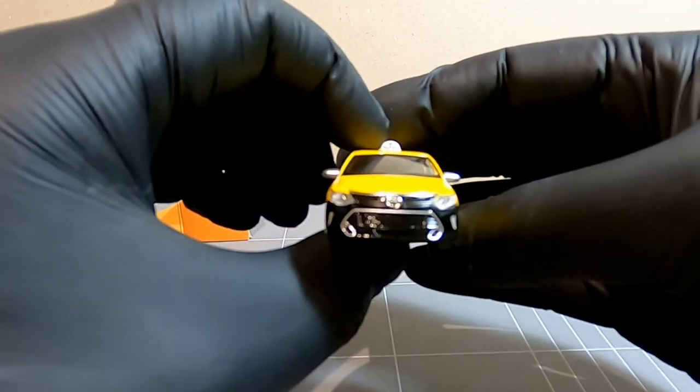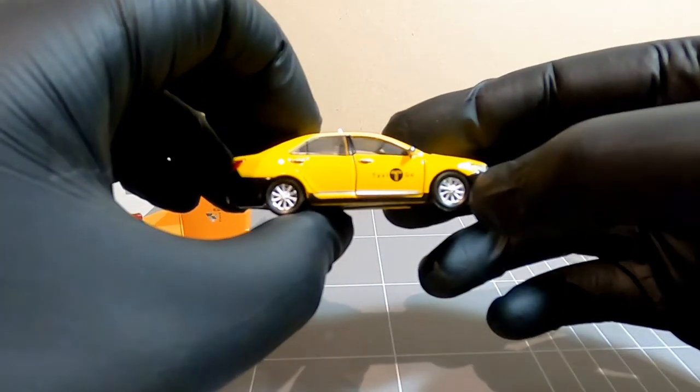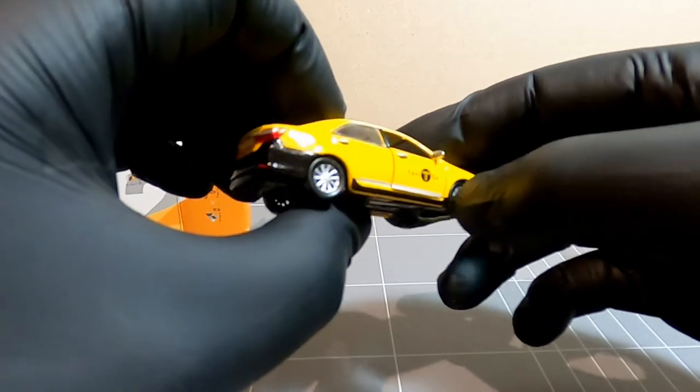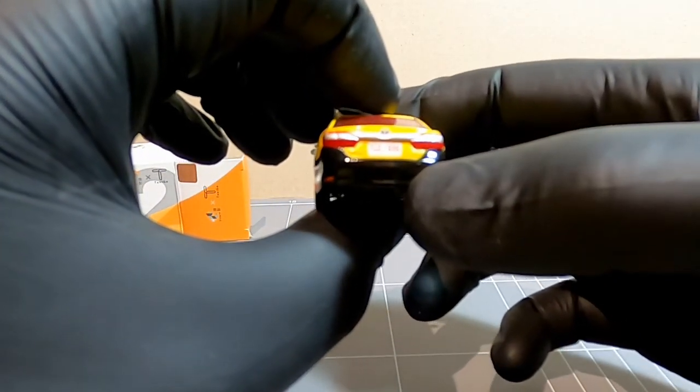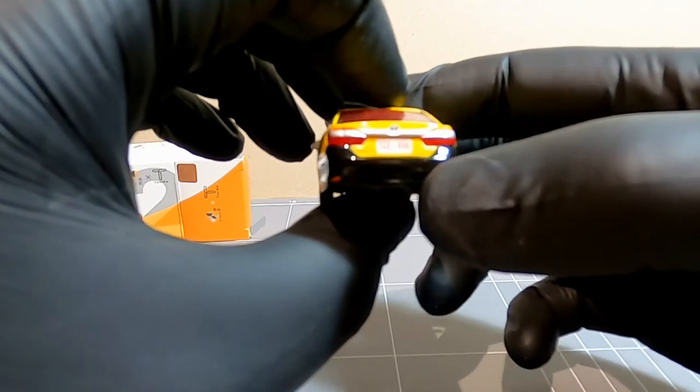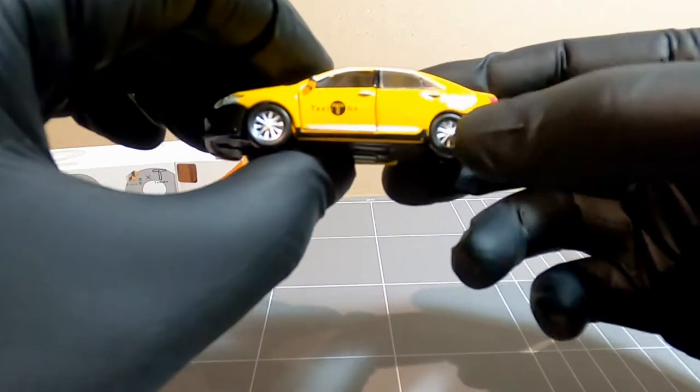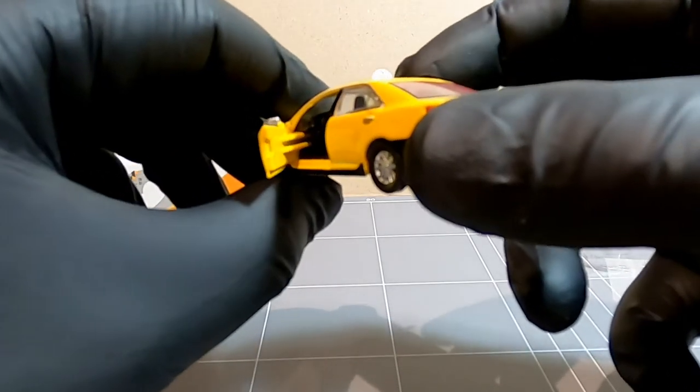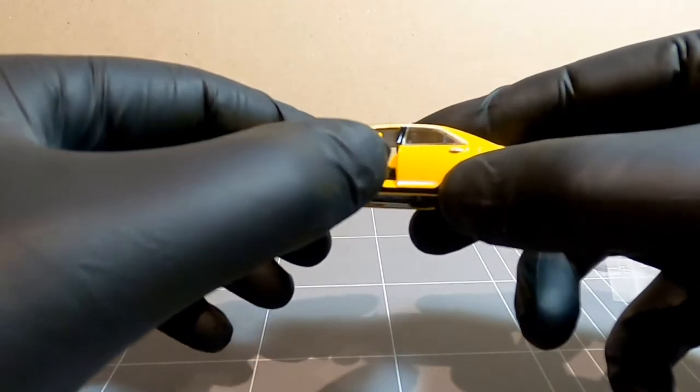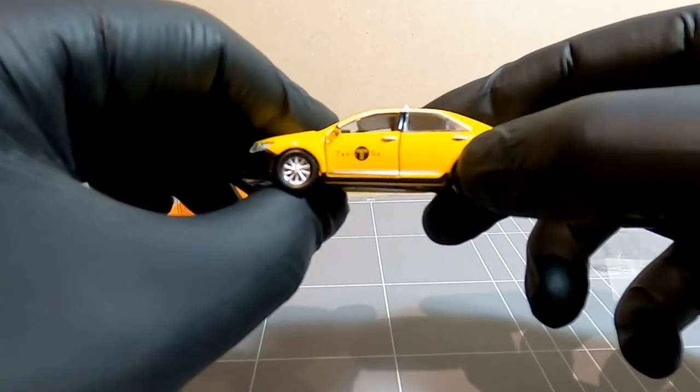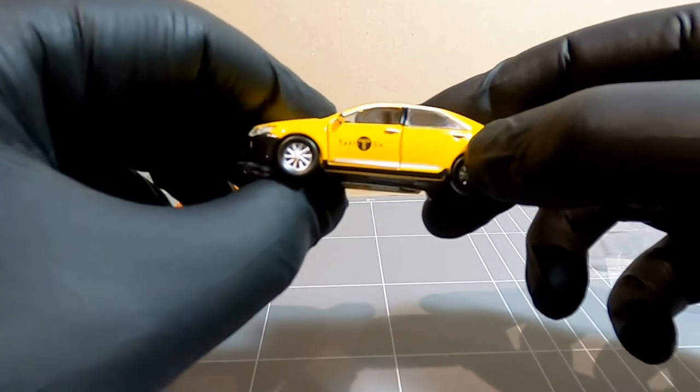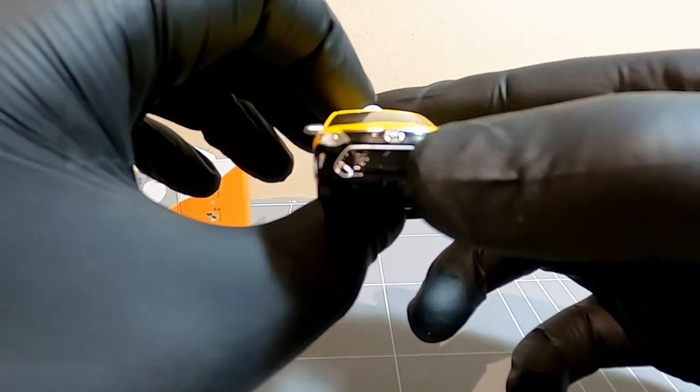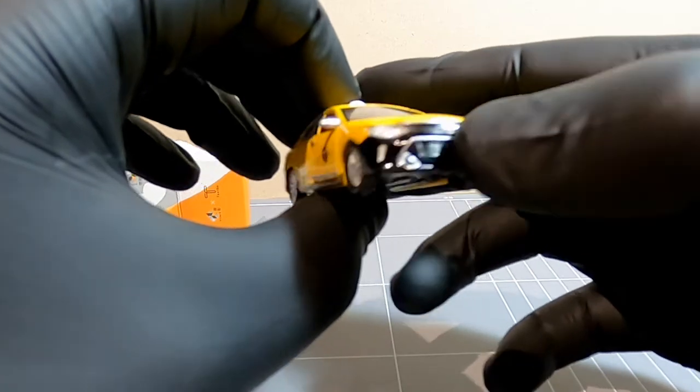So first impressions, it looks pretty good actually. Nice tampo prints. See the taillights there. Open doors. The fitment of the doors is not too bad actually. The front looks pretty cool for a Toyota Camry.